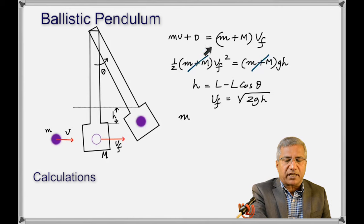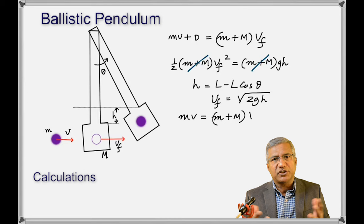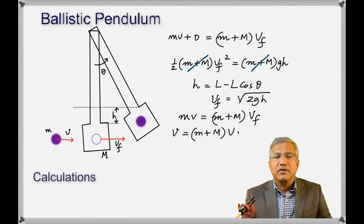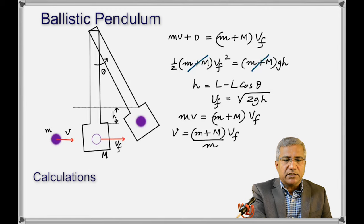Once you get v_f, put it back into the conservation of momentum equation and calculate the initial velocity of the ball. There are three steps: number one, calculate the height h from the average angle; number two, substitute h to calculate v_f; number three, put v_f into the momentum formula to calculate the velocity of the ball. The aim of this experiment is to calculate the ball's launch velocity using conservation of momentum and conservation of energy.